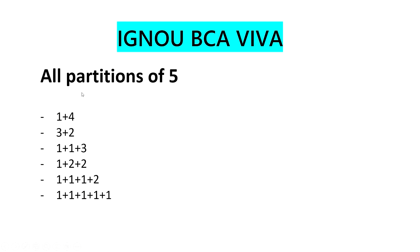Coming to the next question: partitions of 5. Partitions can be 1+4, 3+2, and all such combinations. You can similarly find partitions of 7 and partitions of 3 by listing whatever combinations are possible.